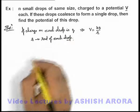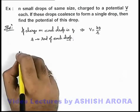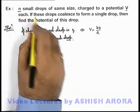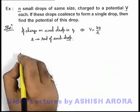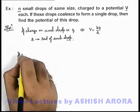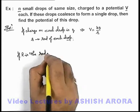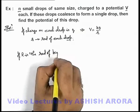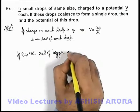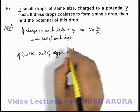Now in this situation, we can write that if n drops coalesce and form a single drop, if capital R is the radius of the bigger drop which is formed after coalescing these n drops.